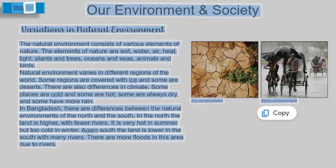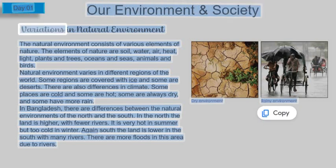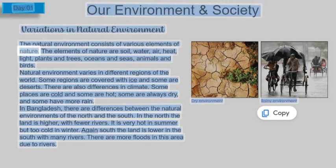Day 01: Our environment and society. Variations in natural environment. The natural environment consists of various elements of nature. The elements of nature are soil, water, air, heat, light, plants and trees, oceans and seas, animals and birds.